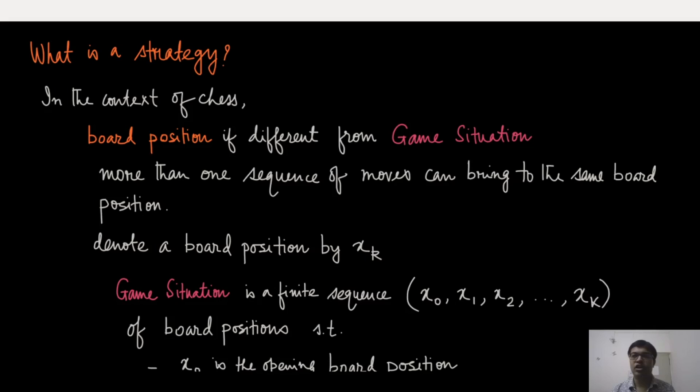Game situation, on the other hand, is something like a history. The sequence of moves, the sequence of board positions that has given rise to the current state, which is also a board position, the whole history is going to be called as the game situation. Just to give you a context, the board position, the same board position can be achieved in multiple different ways. So, the board position is not a unique thing. There could be multiple ways to reach that. While the game situation is a unique thing, in one specific sequence of moves, a sequence of board positions will always give you to the same board position and that sequence will be unique.